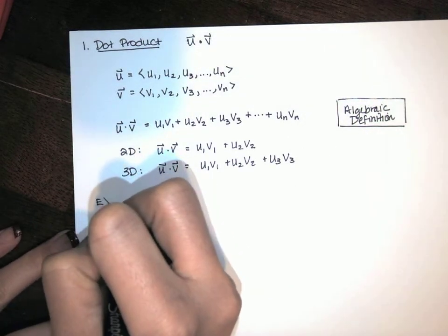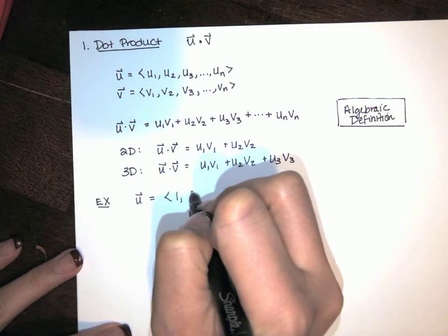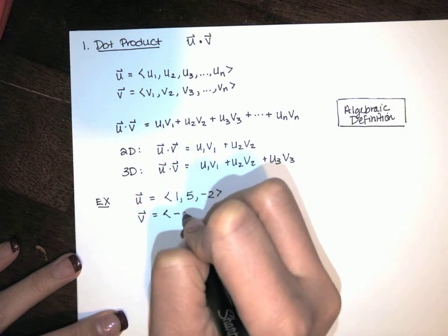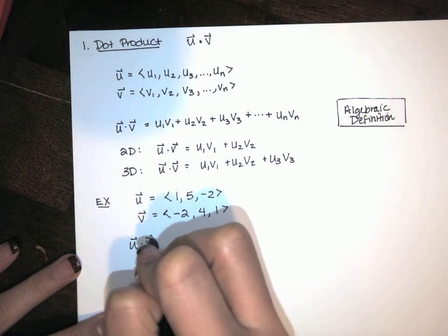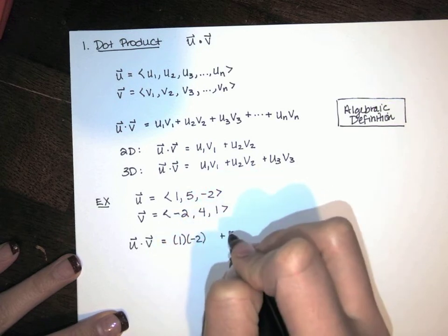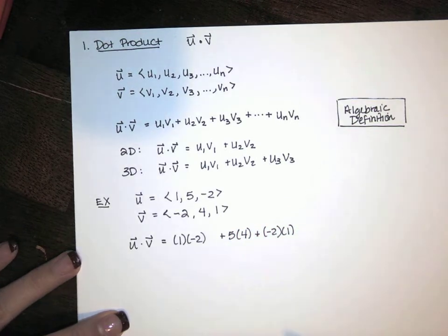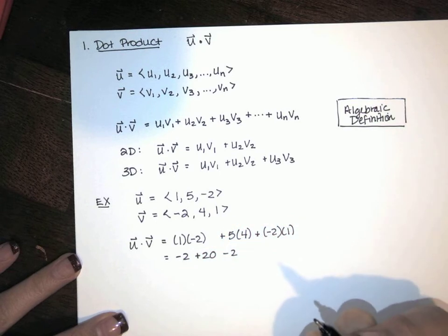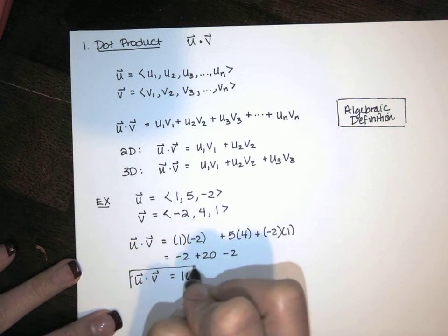Here's a quick example. If u equals the vector (1, 3, -2) in three-dimensional space, and v is the vector (-2, 4, 1), the dot product is 1 times -2, plus 3 times 4, plus -2 times 1. That gives us -2 plus 12 minus 2, which equals 8. Wait — that's the dot product of those two vectors.